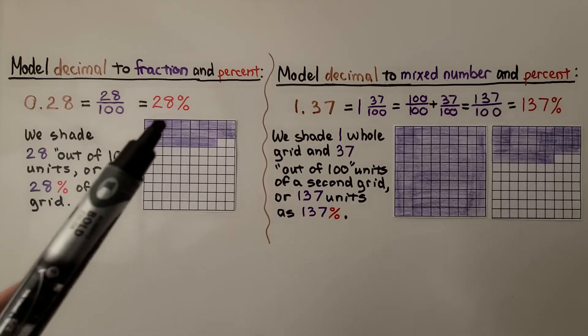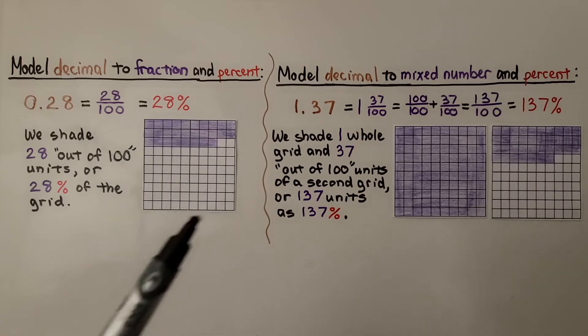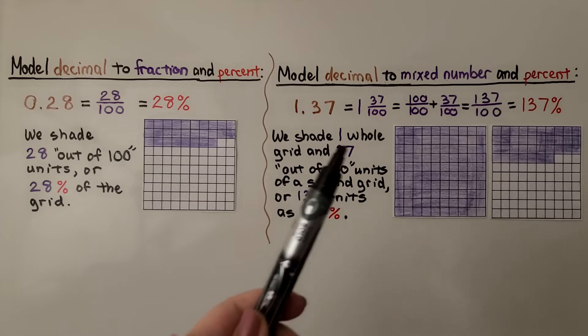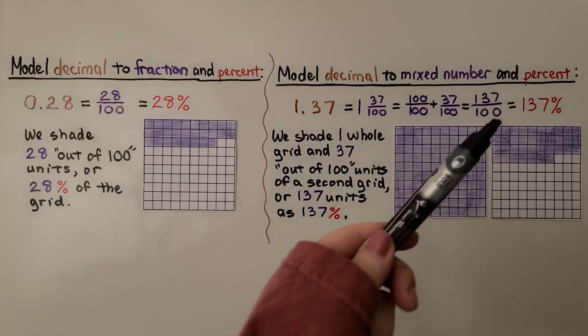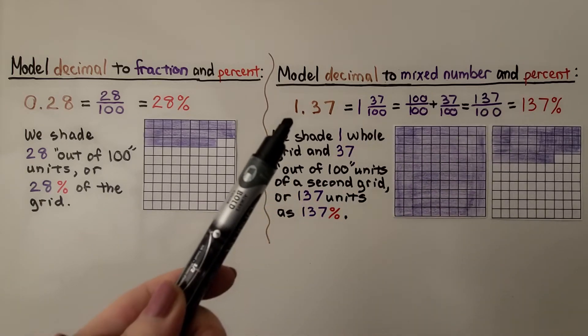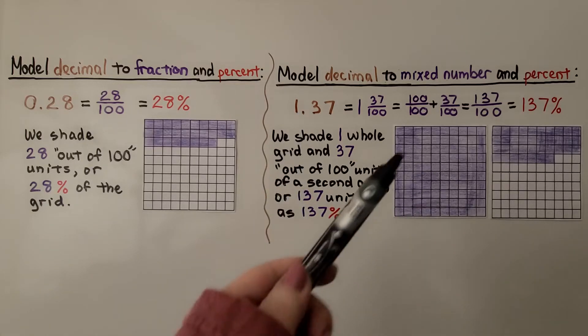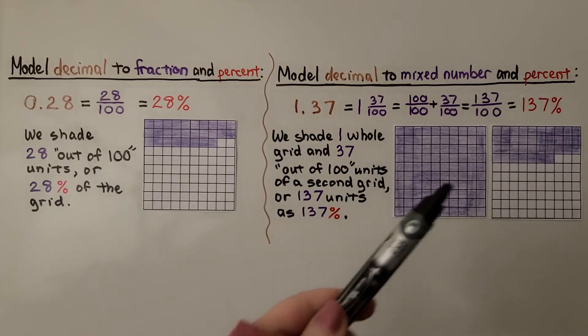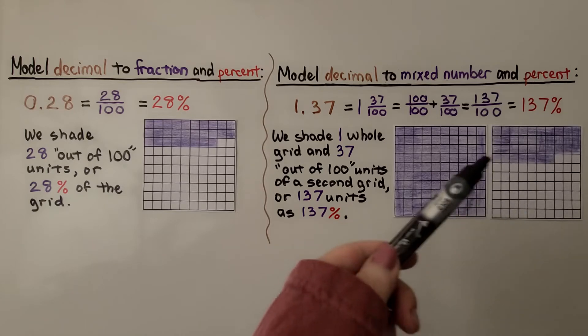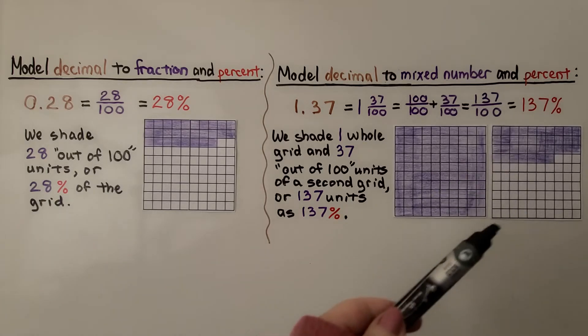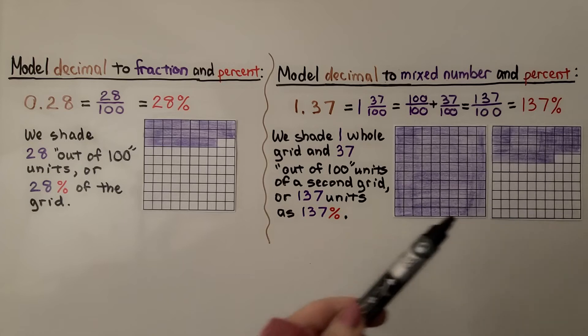We have 28 shaded out of a total of 100. To model decimal to mixed number and percent, we have 1 and 37 hundredths. We shade one whole grid for the one and 37 out of 100 units of a second grid or 137 units in all as 137%.